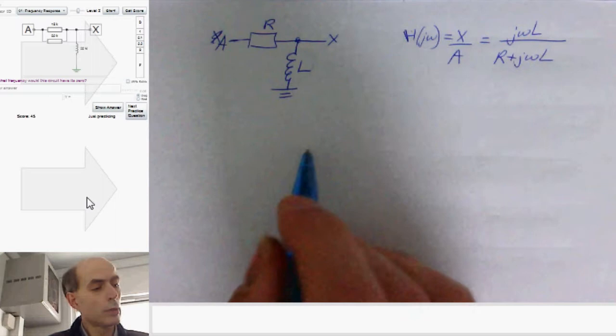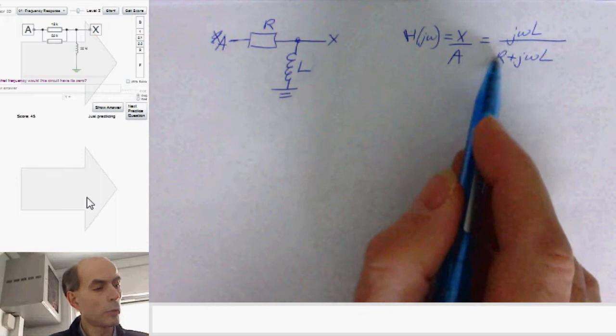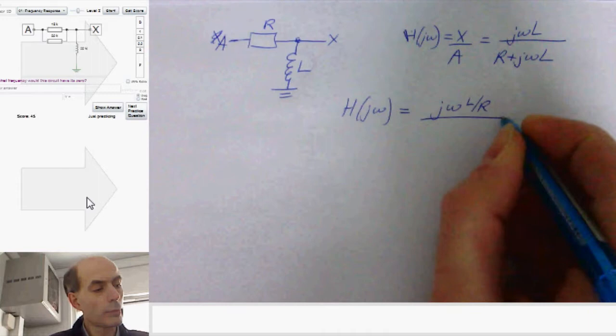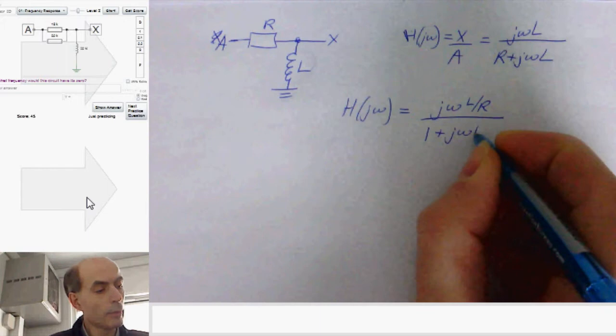Now, if we try to get this into the standard format, we can do that just by dividing the bottom and the top by R. And that would give us H of j omega equals j omega L over R, and 1 plus j omega L over R.